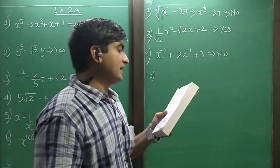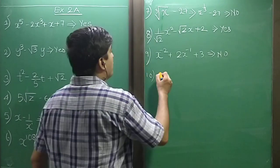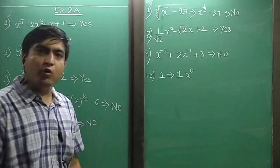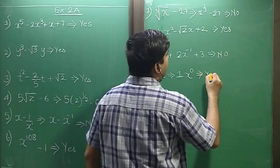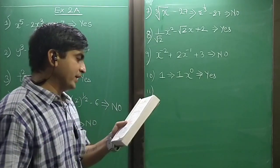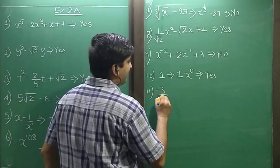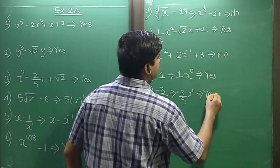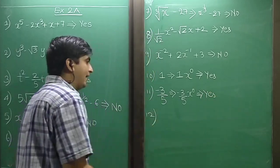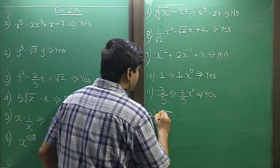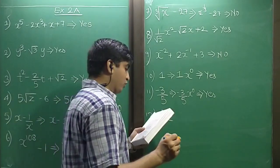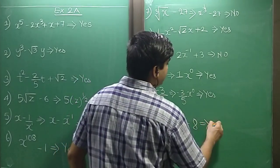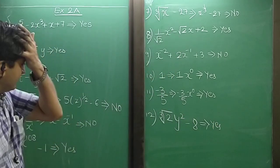Sum 10: The constant 1 can be written as 1 times x raise to 0, which is a whole number, so yes, it is a polynomial. Sum 11: Minus 3/5 can be written as minus 3/5 times x raise to 0, so yes, it is a polynomial. Sum 12: root 3 times 2y squared minus 8 — yes, it is also a polynomial.